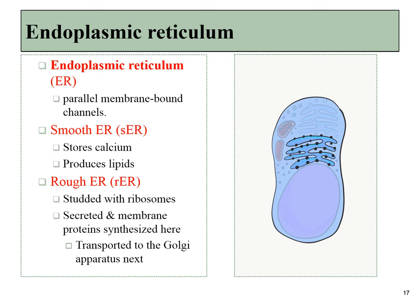The endoplasmic reticulum is a phospholipid bilayer-surrounded organelle with a distinct inside and outside. There are two types: the smooth endoplasmic reticulum, involved in calcium storage and the production of certain lipids, and the rough endoplasmic reticulum, which has ribosomes and is where proteins that will be secreted or inserted into the plasma membrane are produced.